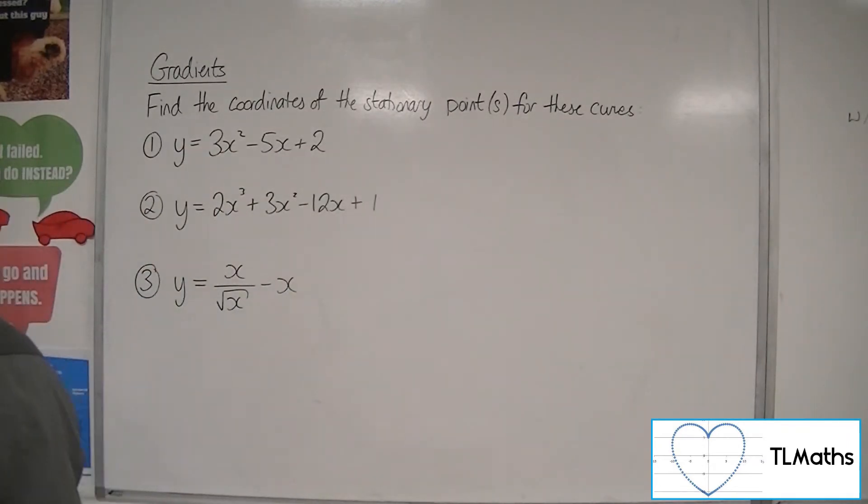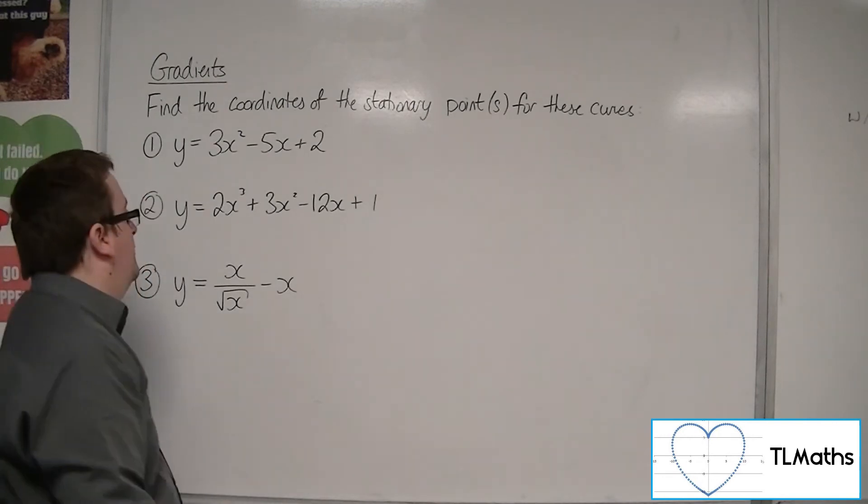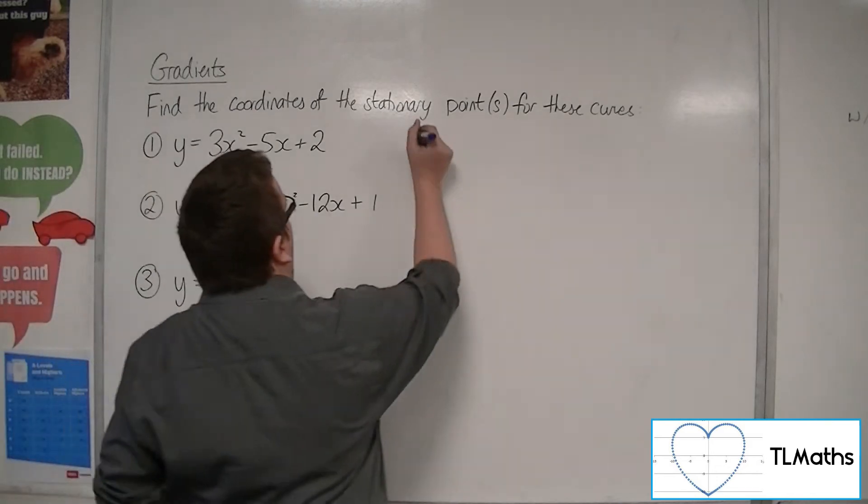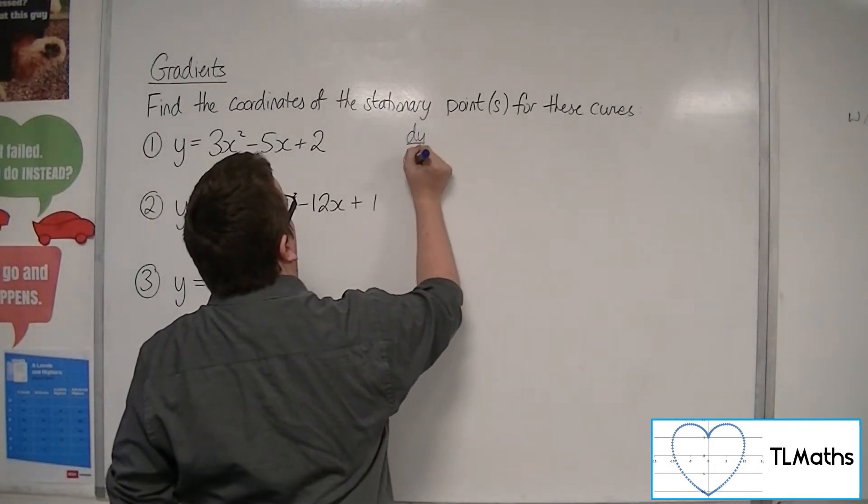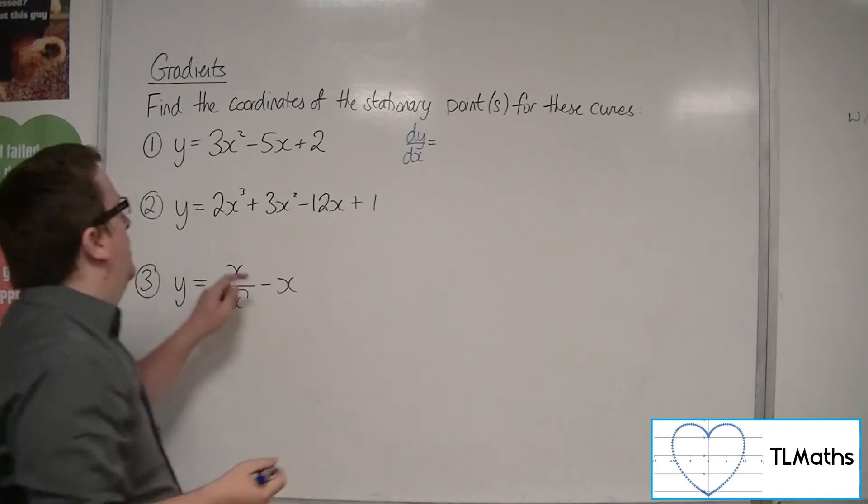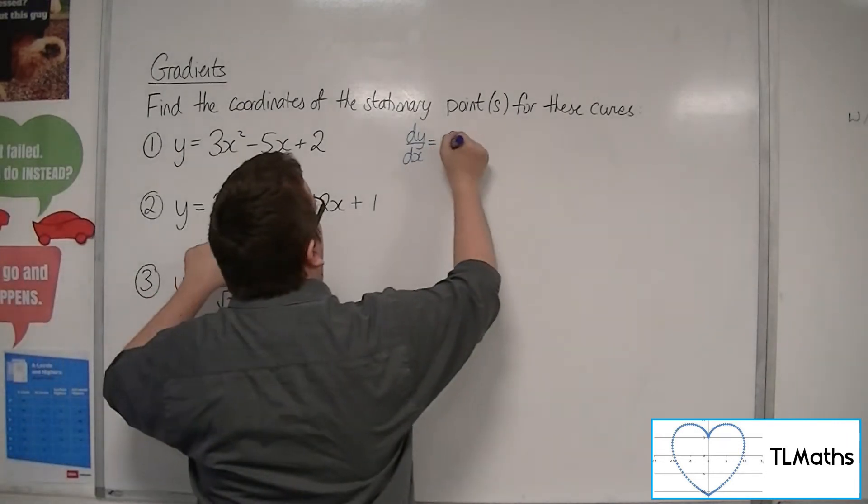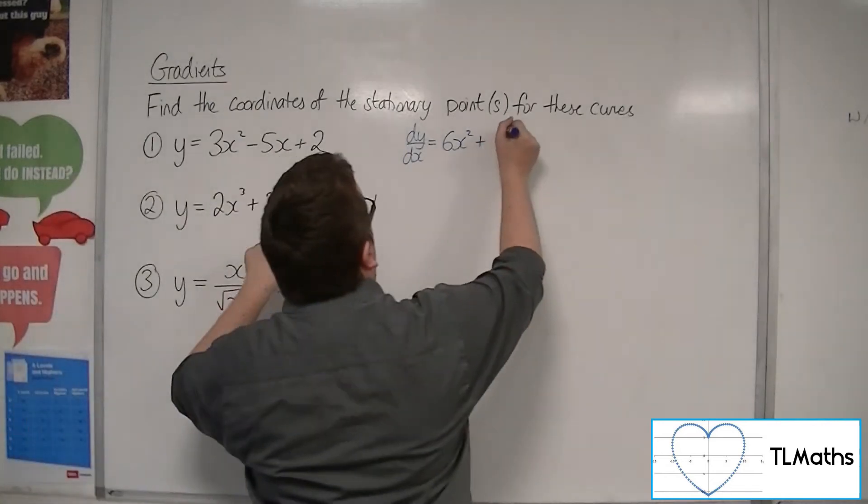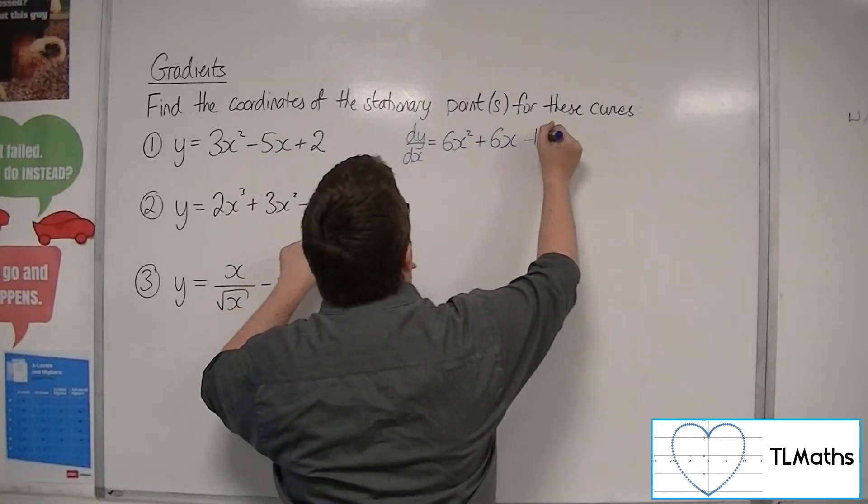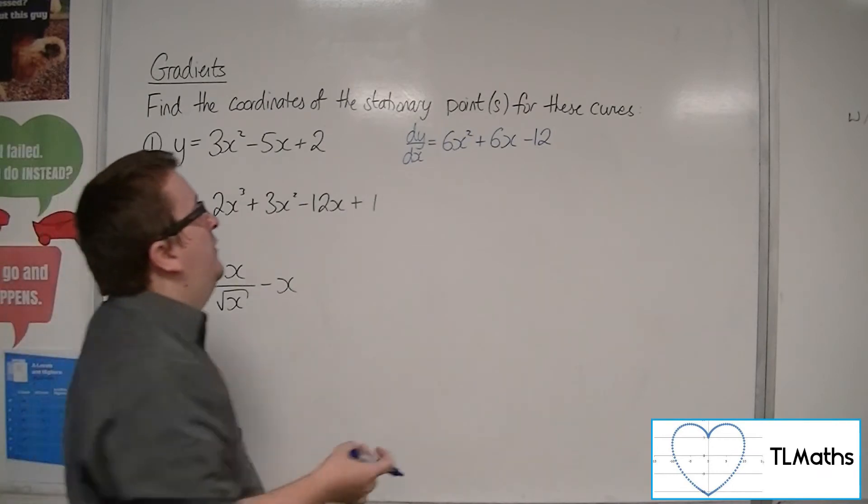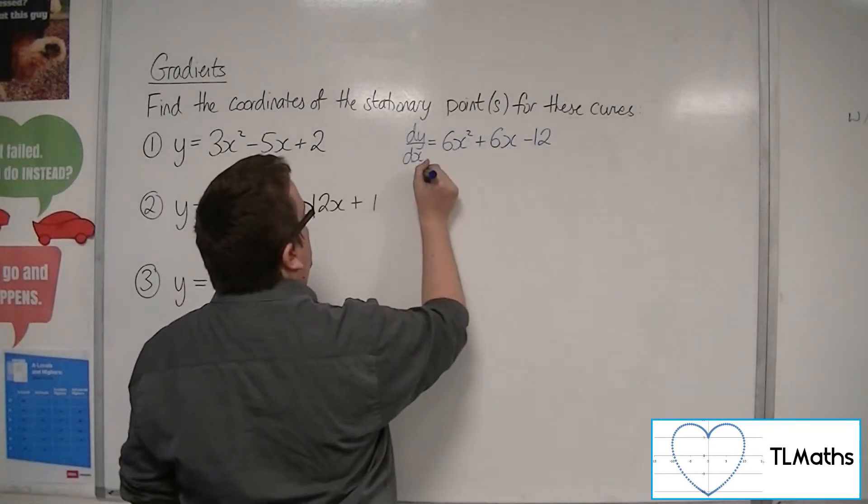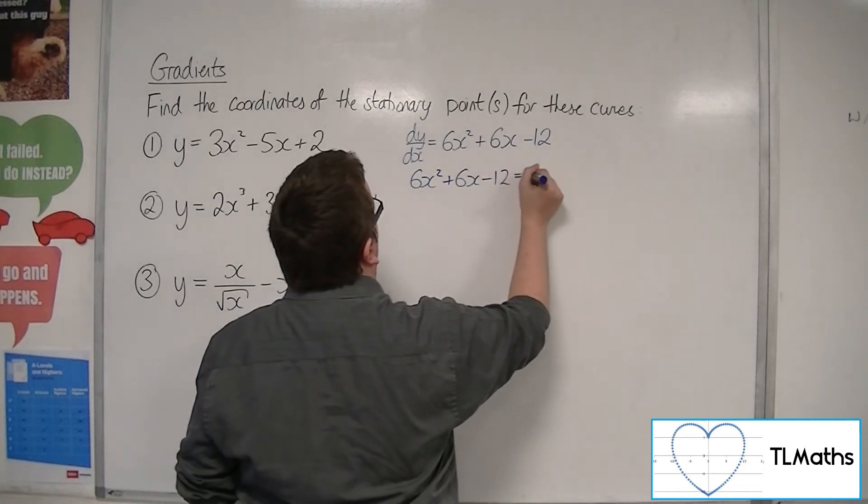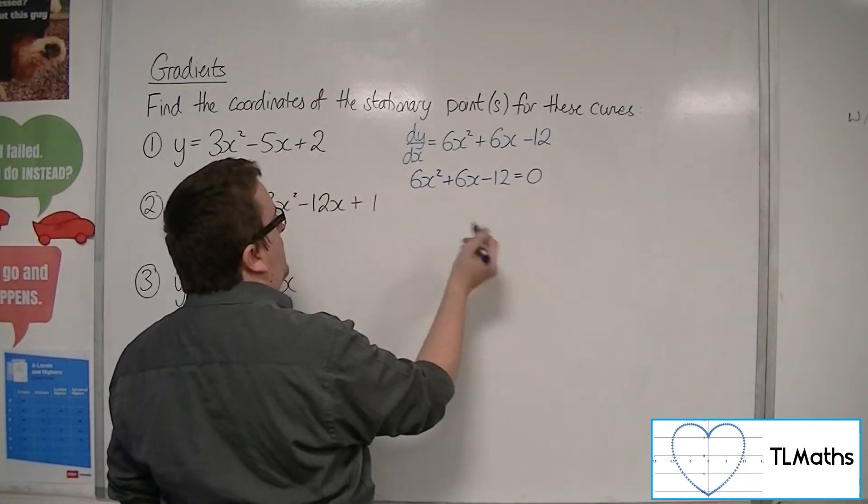Now we can't do completing the square to check for number 2. We've just got to use this method now. So number 2 goes straight in with dy/dx. We're going to get 6x squared plus 6x minus 12. Stationary points exist when dy/dx is 0. So if we put dy/dx equal to 0, we can divide everything by 6.